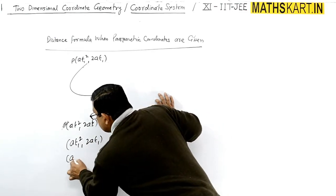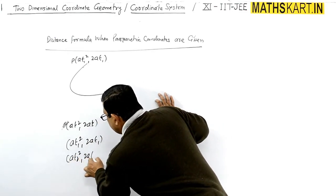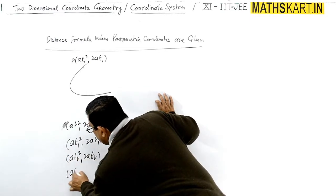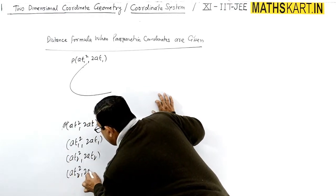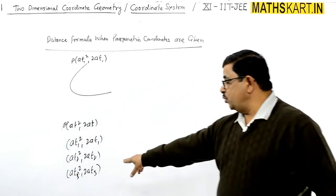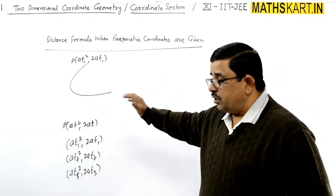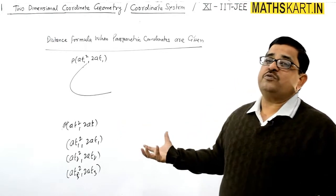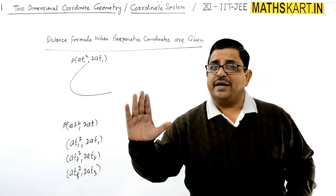At2 square, 2at2. This is the second point. And third point, at3 square, 2at3. At1, at2, at3. So likewise we can write the many points.